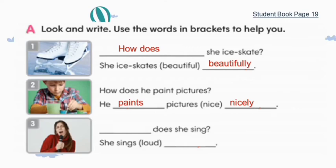Number three — kurang kata apanya? How atau how much? 'How' ya. Kalau 'how much' itu tanya harga. 'How' tanya bagaimana, atau menanyakan adverb of manner-nya. How does she sing? Jawabannya: She sings loudly — 'loud' ditambahkan -ly jadi 'loudly'.